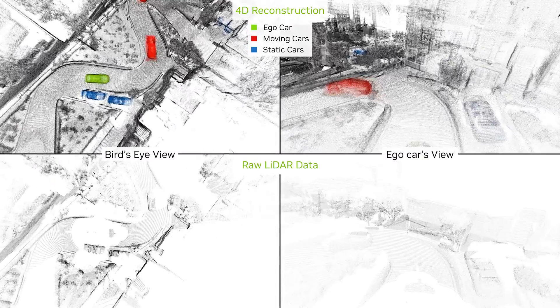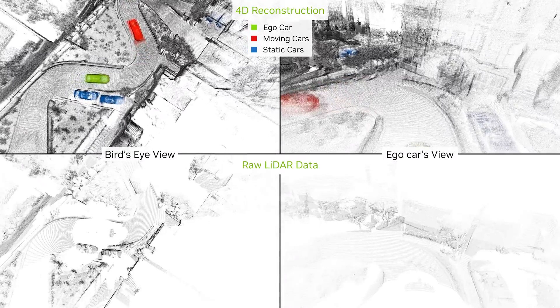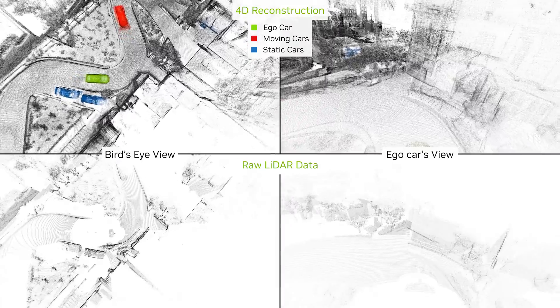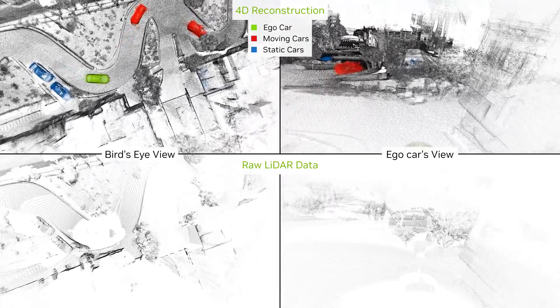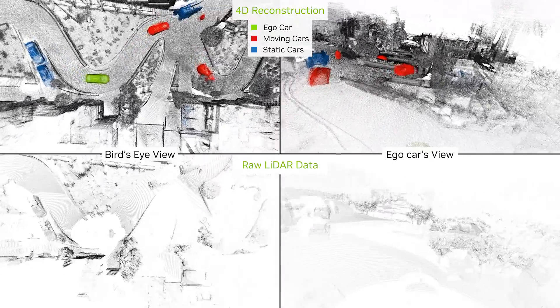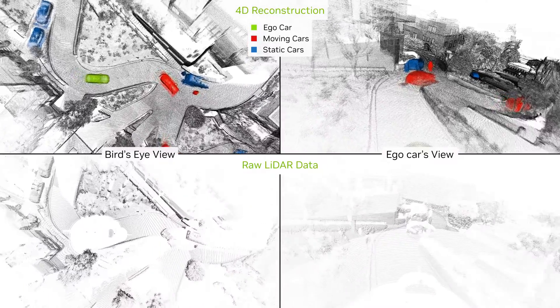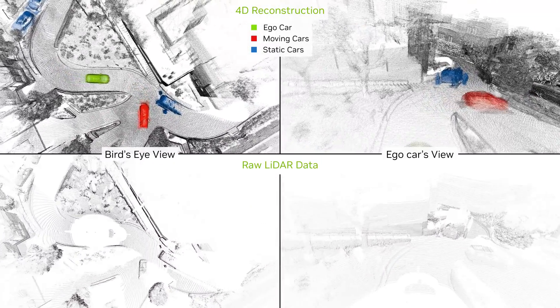The 4D map can be sampled at an arbitrary timestamp, providing accurate depth, free space, segmentation, and occlusion information for both stationary and dynamic objects.